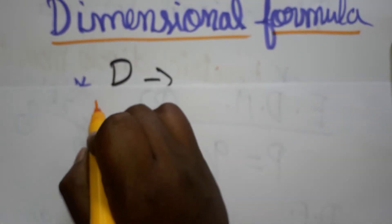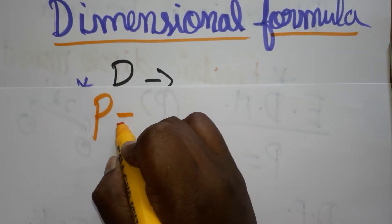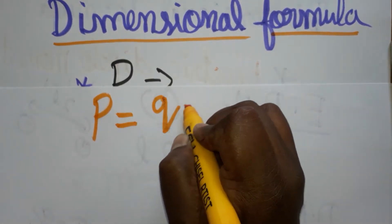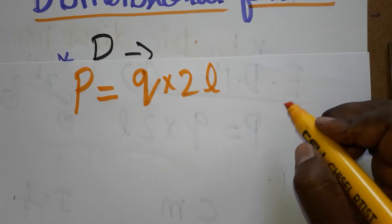please subscribe. First, we will see electric dipole. P is the symbol of electric dipole. It is a product of one of the charges and distance between the two charges. For example, if we take